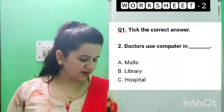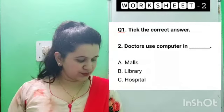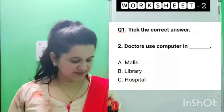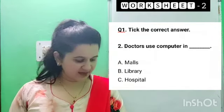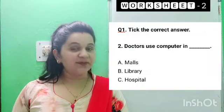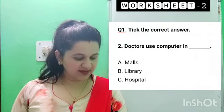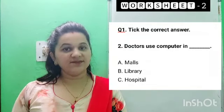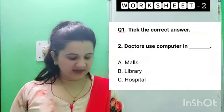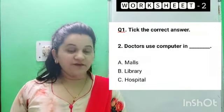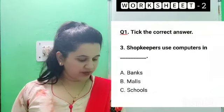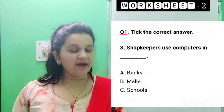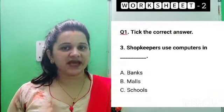Options are: A. Malls, B. Library, and C. Hospitals. Just record all the things and find out the correct answer. Now the third one: shopkeepers use computers in blank.